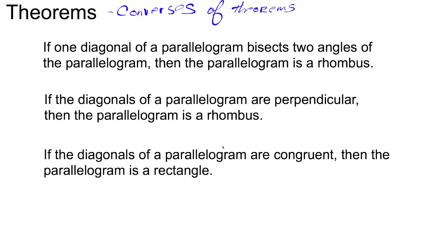Here we have three more theorems — really just the converses of the theorems we've already seen. First: if one diagonal of a parallelogram bisects two angles of the parallelogram, then the parallelogram is a rhombus. Second: if the diagonals of a parallelogram are perpendicular, then the parallelogram is a rhombus. Third: if the diagonals of a parallelogram are congruent, then the parallelogram is a rectangle. We could use these three theorems to prove shapes are either a rhombus or a rectangle.